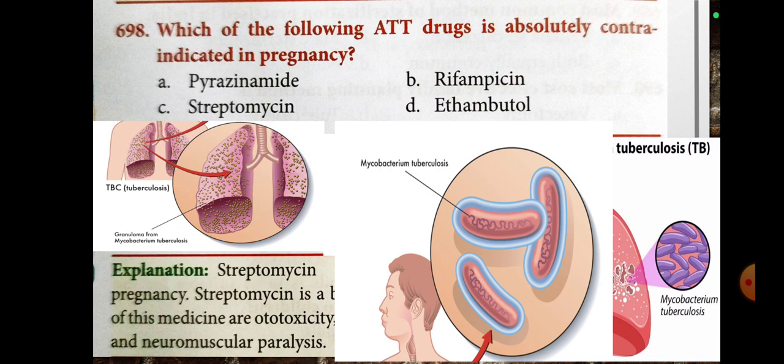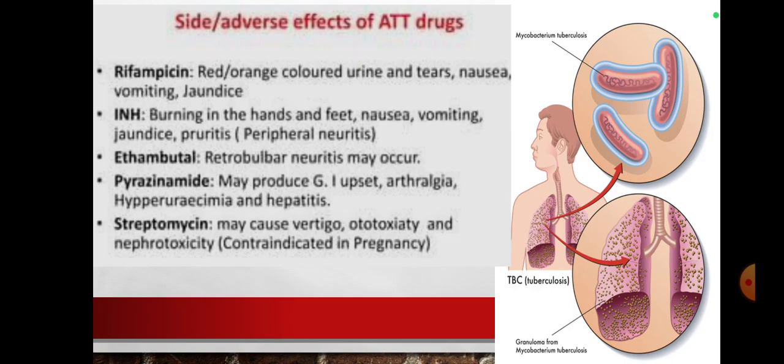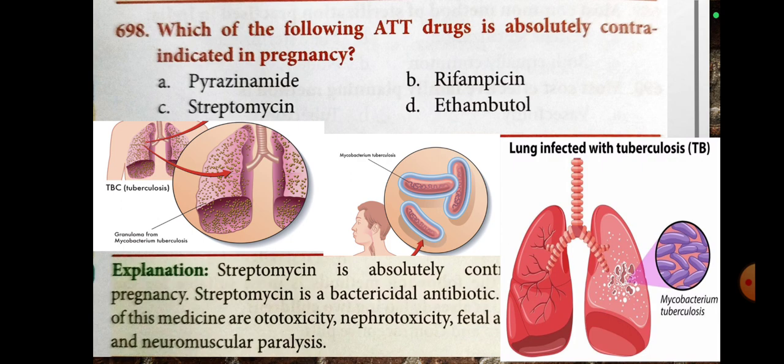The answer is streptomycin. Streptomycin is absolutely contraindicated in pregnancy. Streptomycin is a bactericidal antibiotic. Its side effects include ototoxicity, nephrotoxicity, and neuromuscular paralysis.